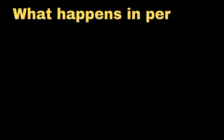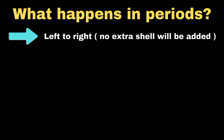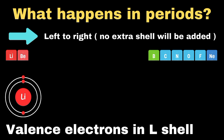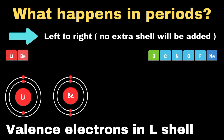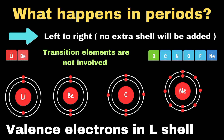Now we should discuss what happens in the case of periods. If we consider elements from left to right in periods, no extra shells are being added. Let's understand this with the elements of the second period. The first member is lithium, and it has valence electrons in the L-shell. If we move towards beryllium, its atomic number is 4, and the valence electron will still be in the L-shell since it can have a maximum of 8 electrons. Similarly, as we move from carbon to neon, the valence electrons are present in the same L-shell. So no extra shells are added when moving from left to right in periods. Note that we should not include transition elements in this case because they have an irregular trend; we will focus on non-transition elements.